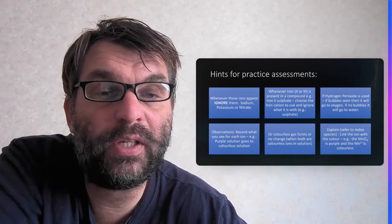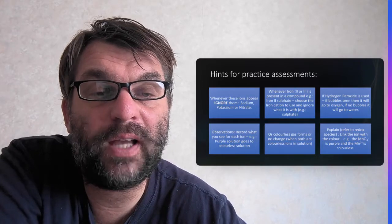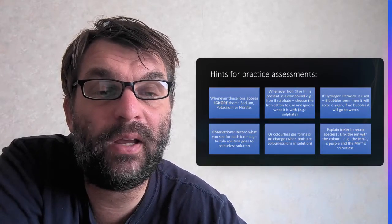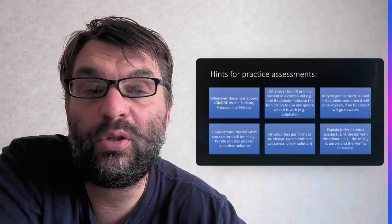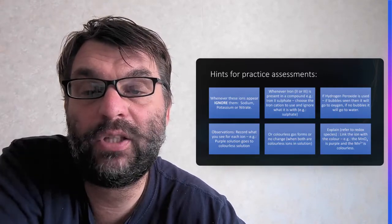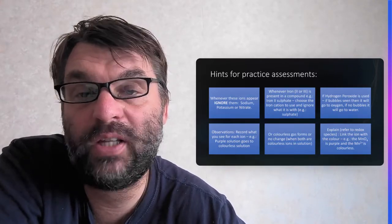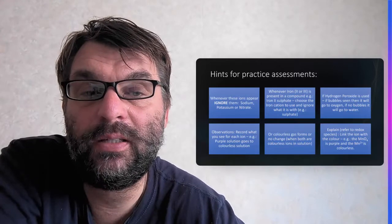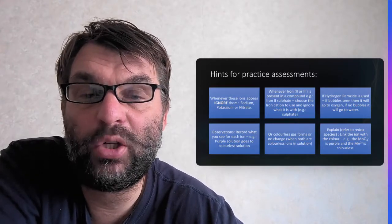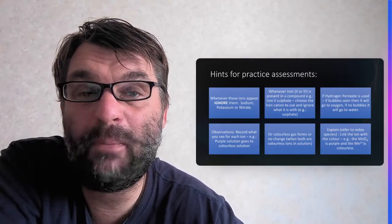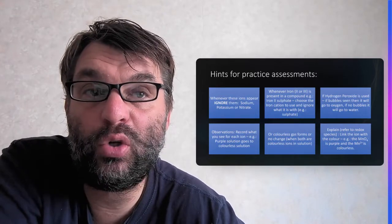Always explain linking it to color. For example, permanganate is purple and manganese 2+ is colorless, so make sure you also link your oxidation and reduction processes to a particular color change. And that's about it, good luck.